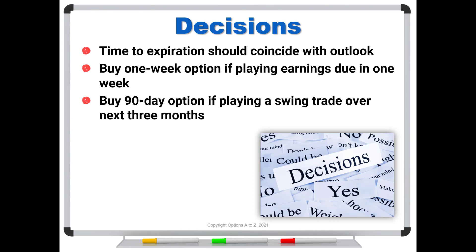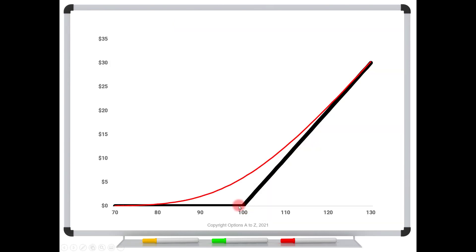So here's what's happening. Here's the most important thing to understand about time and delta. Here's our risk graph for a $100 call. In black is the expiration profile. In red is the current. Now this is a payoff diagram. It doesn't show that we've paid anything for the option, but I'm just doing this to show the effect of time.